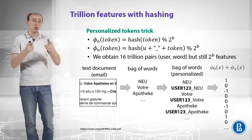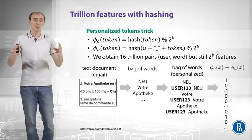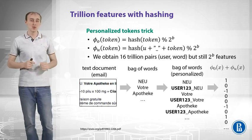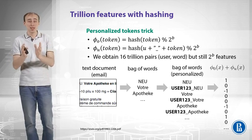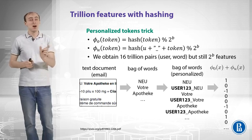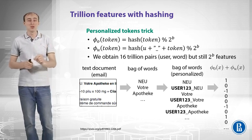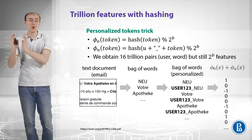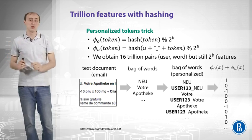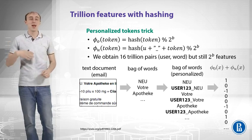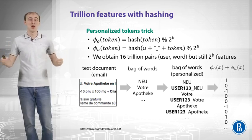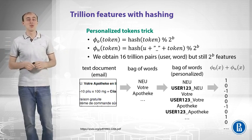Here is our pipeline: we have a text document, we extract tokens, we add personalized tokens by prepending a prefix — for example 'user123_' — to all tokens seen for that user. We then hash all those tokens and produce a sparse vector of size 2 to the B.